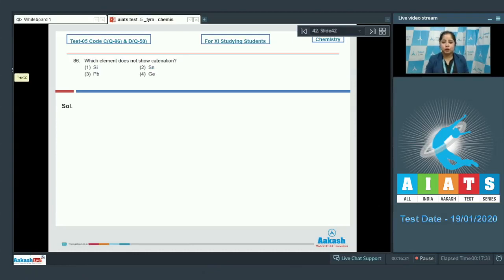In group 14, the order of catenation is carbon, followed by silicon, followed by germanium, which is approximately equal to tin.